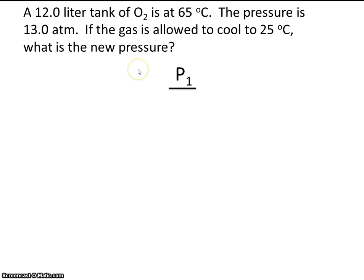Let's write down the formula for Gay-Lussac's law. The volume of the tank is just superfluous information thrown in to make things more challenging. You don't need this 12 liter volume for anything. Let's plug in what we know. The initial pressure is 13 atmospheres, and they're asking for the new pressure P2.